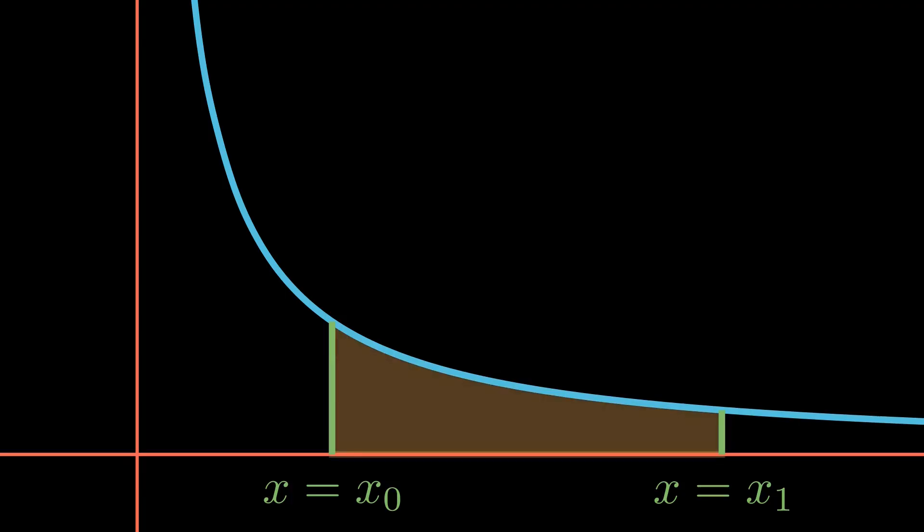On the bottom by the x-axis, or y equals 0, and on the top by our function, y equals 1 over x. We are almost done setting up the problem. We just need a way to calculate this area.